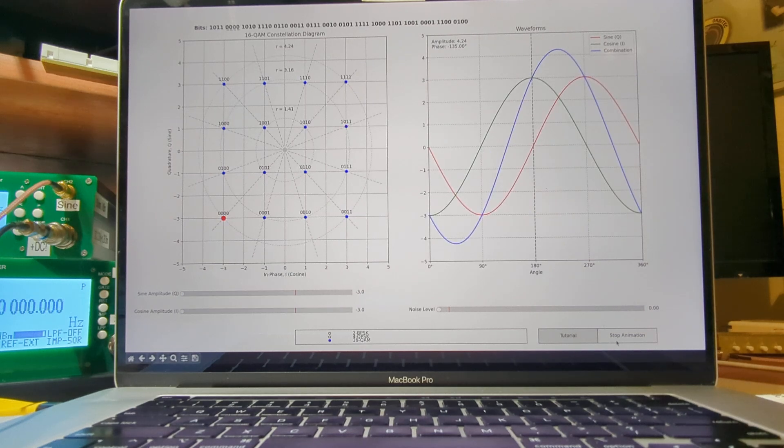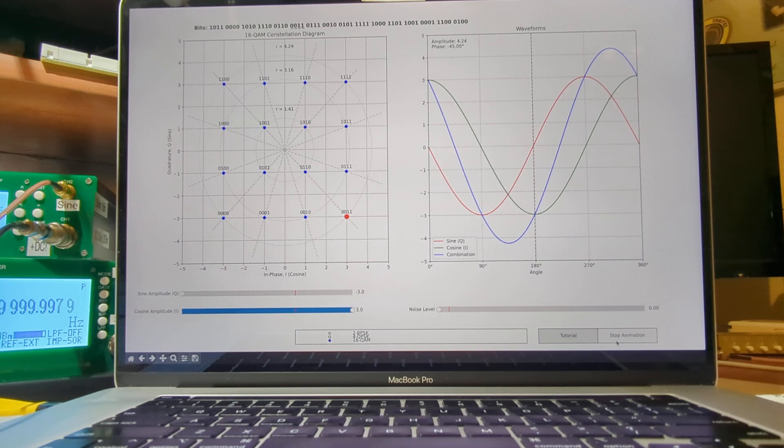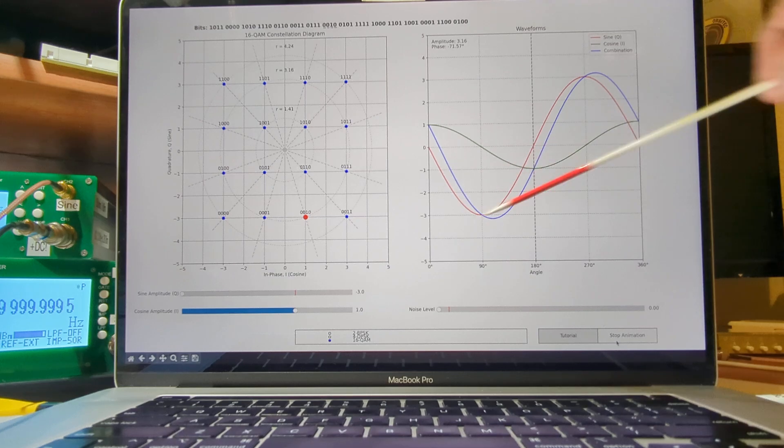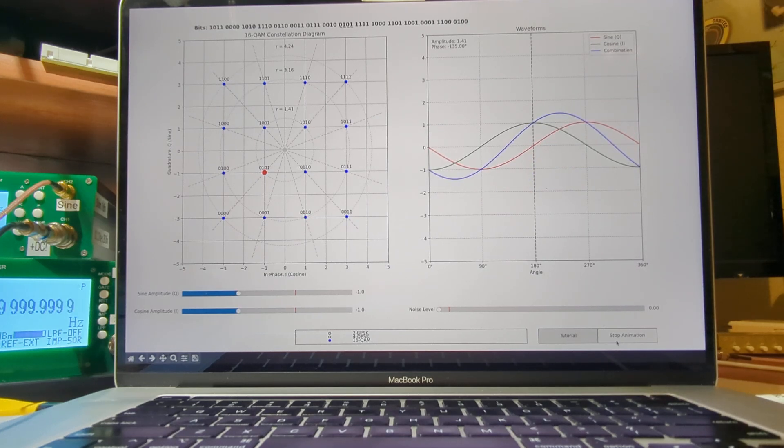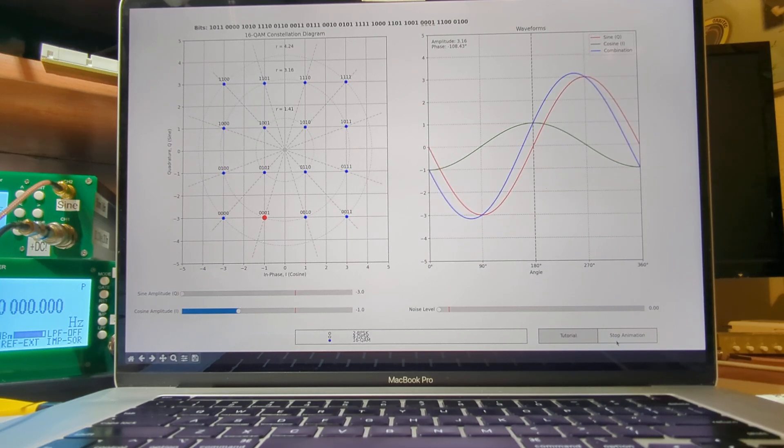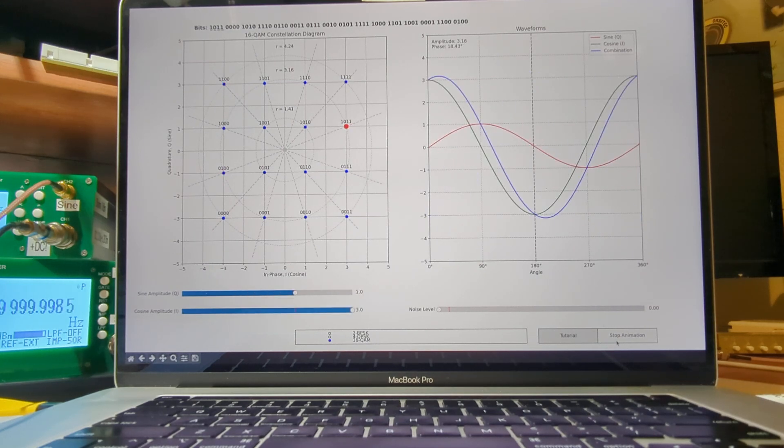So one of the things I did was to create this Python program that simulates quadrature modulation. And it's running right now. So at its core, the idea is to be able to transmit with each transmitted waveform more than one bit of information. And the way that that's achieved is by using two of the attributes of the waveform, the amplitude and the phase of the transmitted waveform. And by combining those two pieces of information, you can transmit more than one bit at a time.